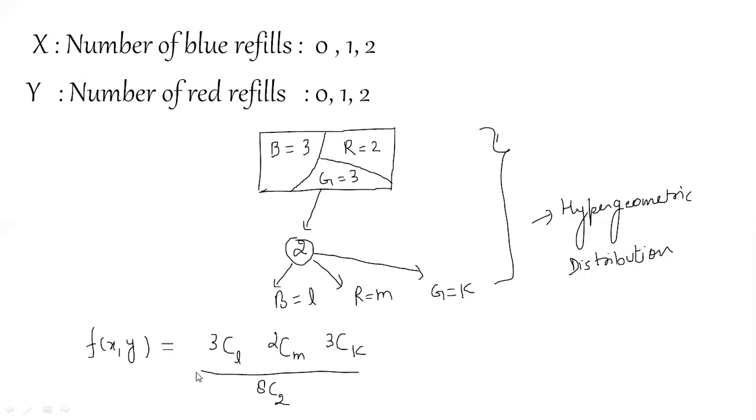For which, f(x,y) ki value hoti hai, 3CL. 3 kya hai yaha par? Blue refills. To ye blue refills L hongi, is ki kya probability hai? 3CL, 3 mein se L hongi. Red refills, 2 mein se M hongi. Is ki kya probability hai? 2CM, possible ways. Probability nahi, possible ways. Green refills K hongi out of 3. Total number of ways of selecting K green refills out of 3 is 3CK.